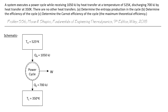A system executes a power cycle while receiving 1050 kilojoules by heat transfer at a temperature of 525 kelvin, discharging 700 kilojoules by heat transfer at 350 kelvin. There are no other heat transfers.